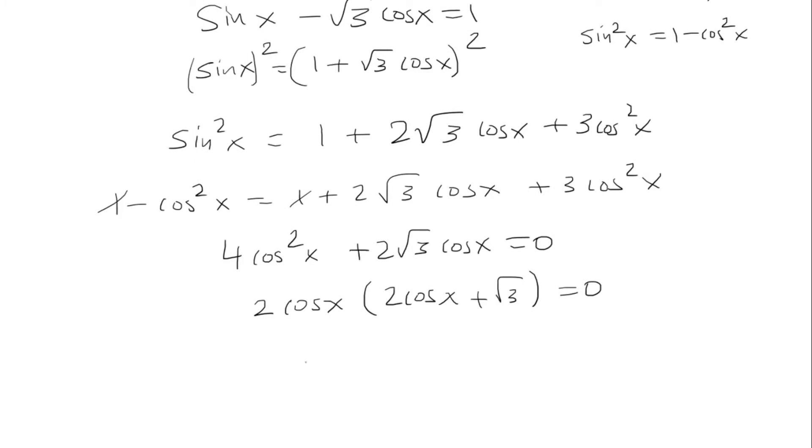And now we're going to set each factor equal to 0. So 2 cosine is equal to 0 and 2 cosine plus root 3 equal to 0. So here I'm going to divide by 2 to get cosine is 0. And then for this one, I'm going to subtract root 3 and divide by 2 to get negative root 3 over 2.